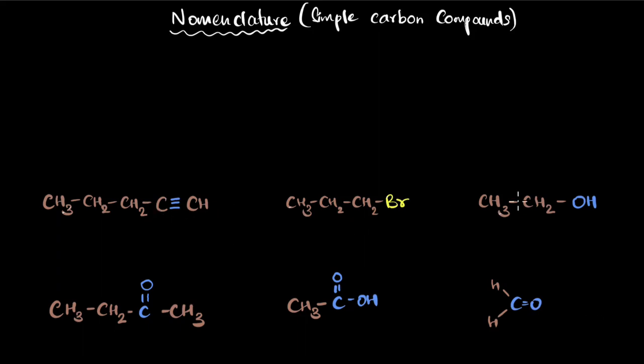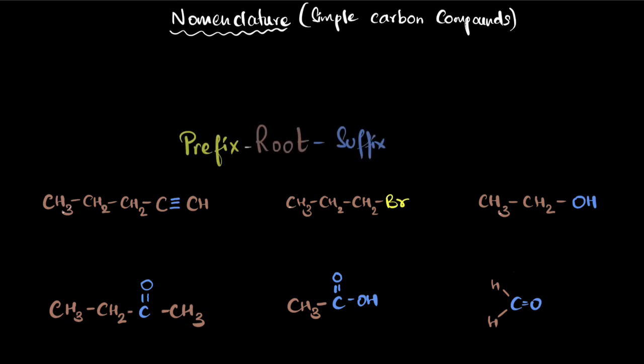Let's explore how to name simple carbon compounds using IUPAC nomenclature. Here's the rule: the name can be divided into three parts — the prefix, the root word, and the suffix.